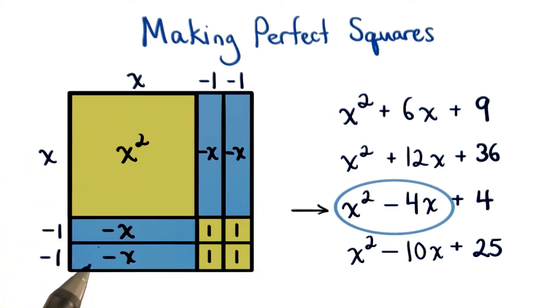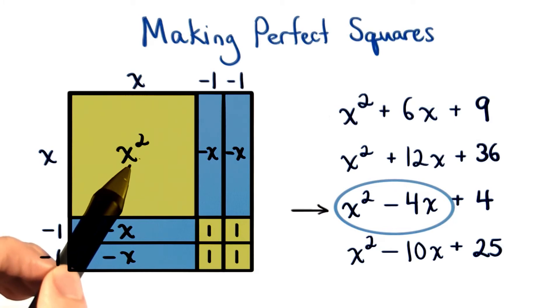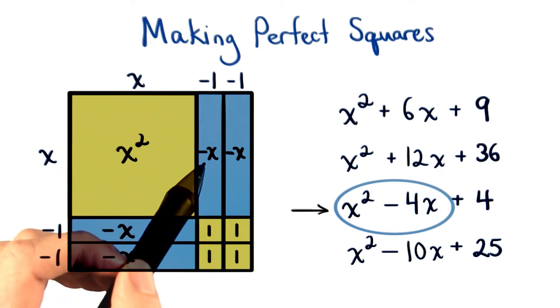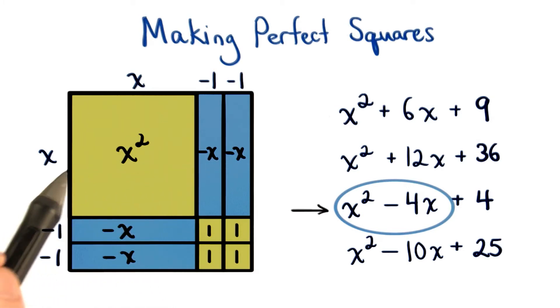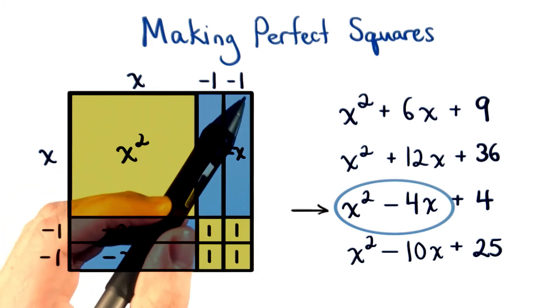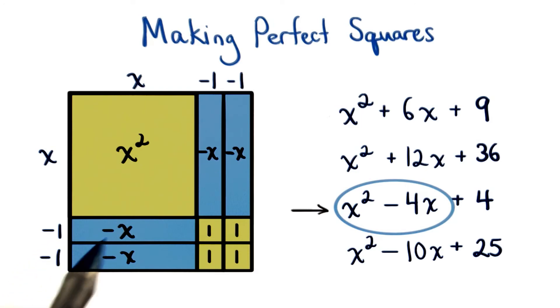We know that this diagram also makes sense in terms of multiplication. We know x times x equals x squared, and x times negative 1 equals negative x. We have this negative x four times. Once here, once here, once here, and once here.